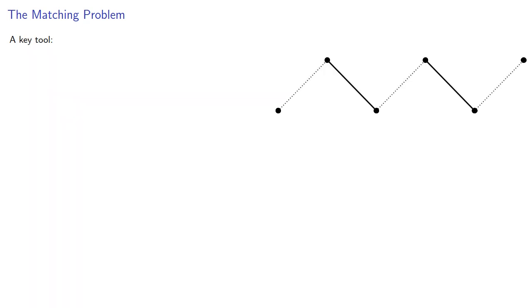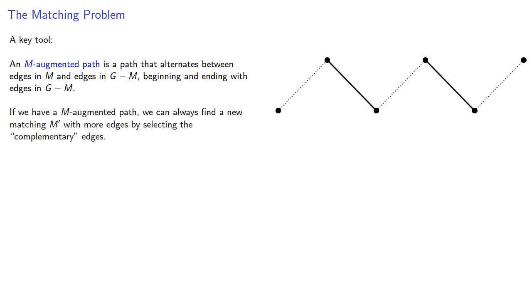Our key tool is the following idea. An M-augmented path is a path that alternates between edges in M and edges in G minus M, beginning and ending with edges in G minus M. The reason this is important is that if we have an M-augmented path, we can always find a new matching M prime with more edges by selecting the complementary edges. But could we find an even larger matching that doesn't require an M-augmented path?